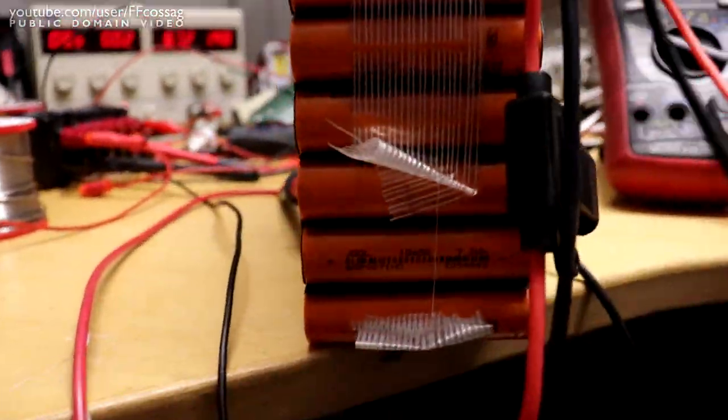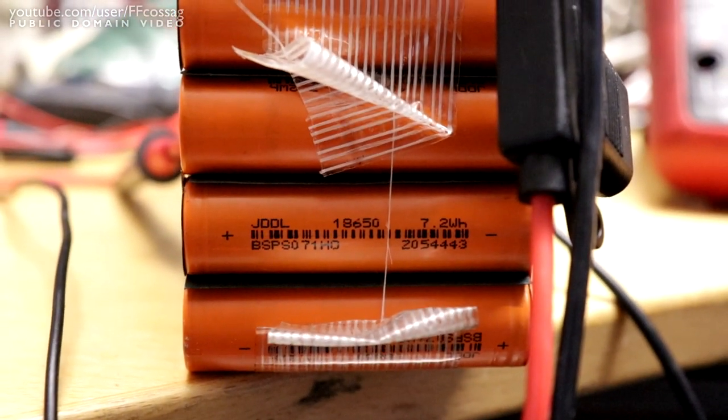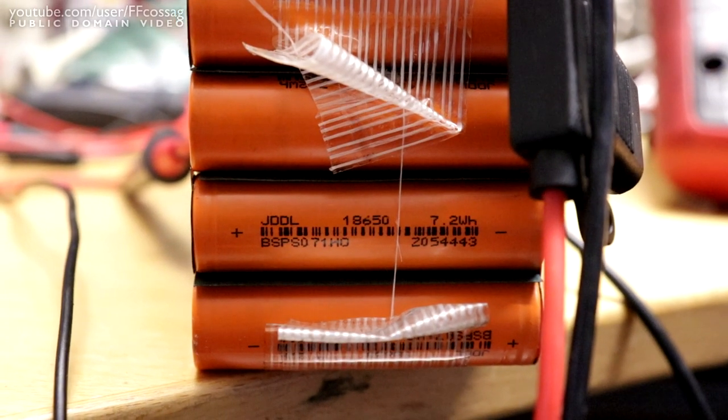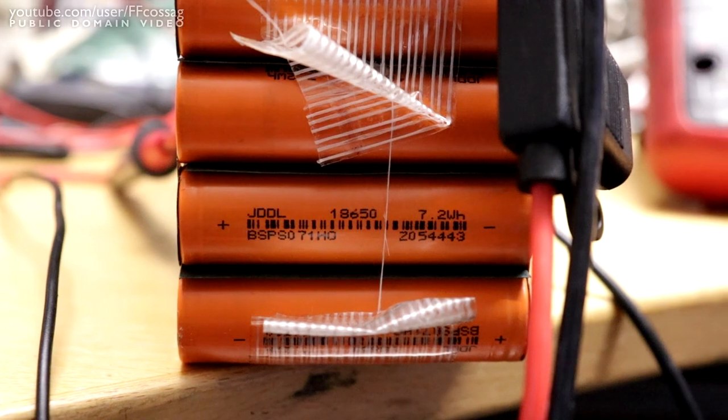So the cells in this pack are VAT, JDDL, 18650, 7.2 watt-hours, BSP, S071H0. I haven't looked up a datasheet for these, but I'd imagine they're 2.5 amps or so.